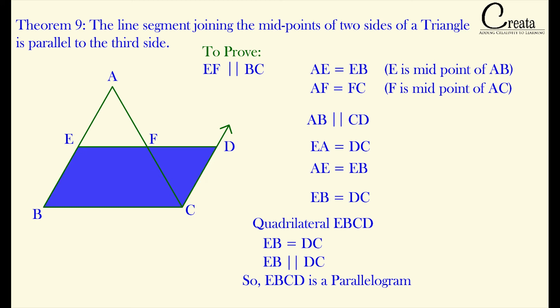Since EBCD is a parallelogram, so its opposite sides will be parallel to each other. So ED is parallel to BC. And EF is a component of ED. So we can say EF is parallel to BC. That is the proof of the theorem. We have proved the line segment joining the midpoints of two sides of a triangle is parallel to the third side.